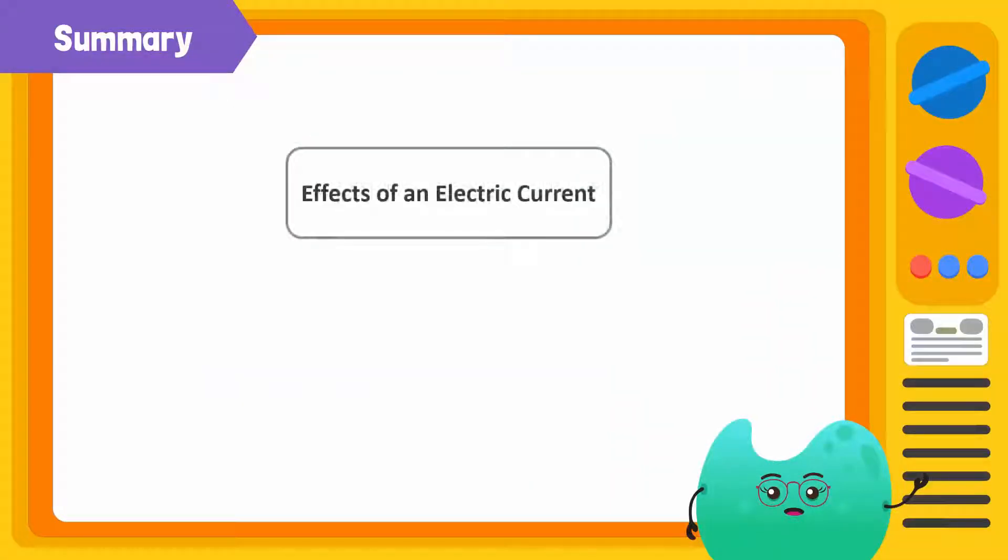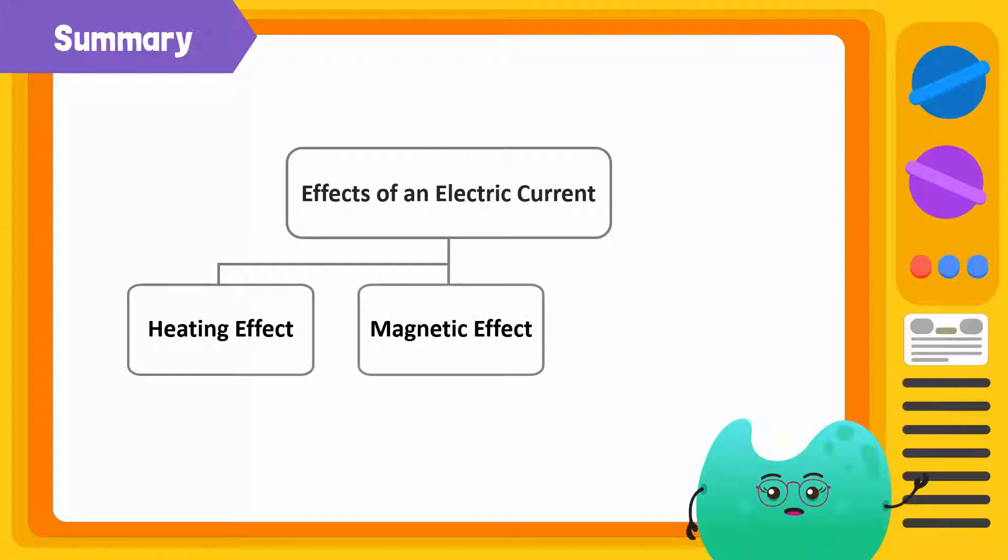To summarize, electric currents produce three major effects. They produce heating, magnetic and chemical effects.